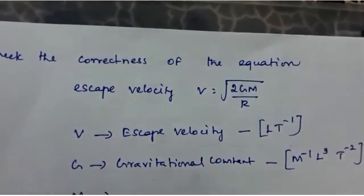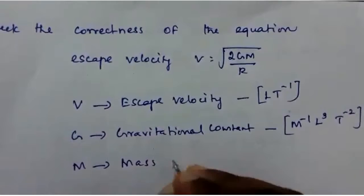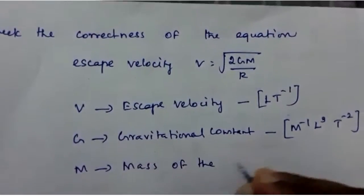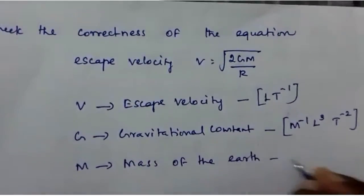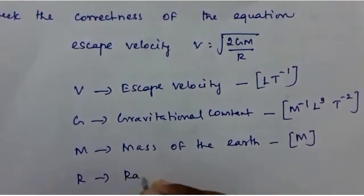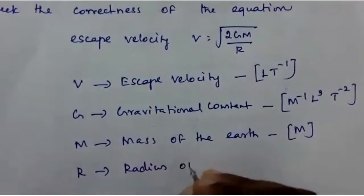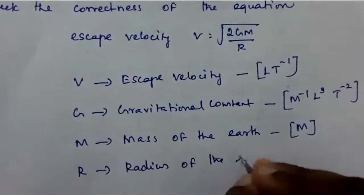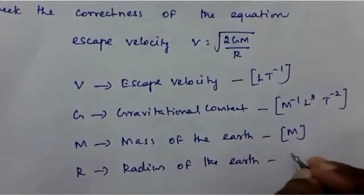M represents mass of the earth, so it is [M]. R represents radius of the earth, so that is [L].